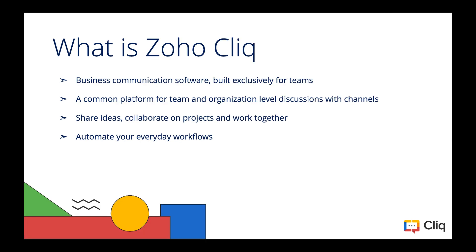Zoho Cliq is a business communication software aimed to make communication and collaboration in a workplace easier. Cliq brings the entire workplace into one single platform so it is easier to collaborate across different teams and departments, share your ideas, and work on projects together. Since communication is a major factor in any workplace, Cliq also allows you to automate everyday workflows, thereby making collaboration a lot more convenient.